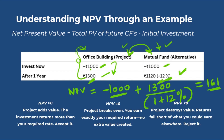That calculation gives you $161. So even after discounting at your minimum required 12% return, the office building gives you $161 more wealth compared to the mutual fund. This is a positive NPV. You're satisfying your minimum 12% criteria and getting an extra $161 on top of that. That's the core idea of NPV.